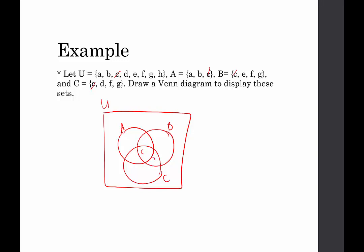The region for B and C — do B and C have anything in common? Yes, they have F and G. So we put F and G in that B and C overlap region. Then we fill in everything else left in set A: A has elements A and B, so we put those in the region only in set A. B still has an E, so we put E in B's exclusive region. C has a D, so we put D in C's exclusive region. And we have H left in our universe, so H goes in the rectangle outside all circles. This is how we represent this particular universe.